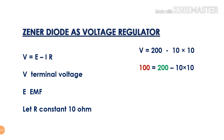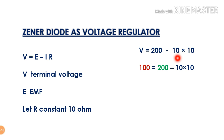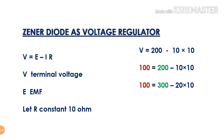V is equal to E minus IR. Suppose the battery EMF is 200 and the value of the resistance is constant at 10. Battery EMF is 200, and the current due to that EMF — suppose that is 10. So what will be the terminal voltage?